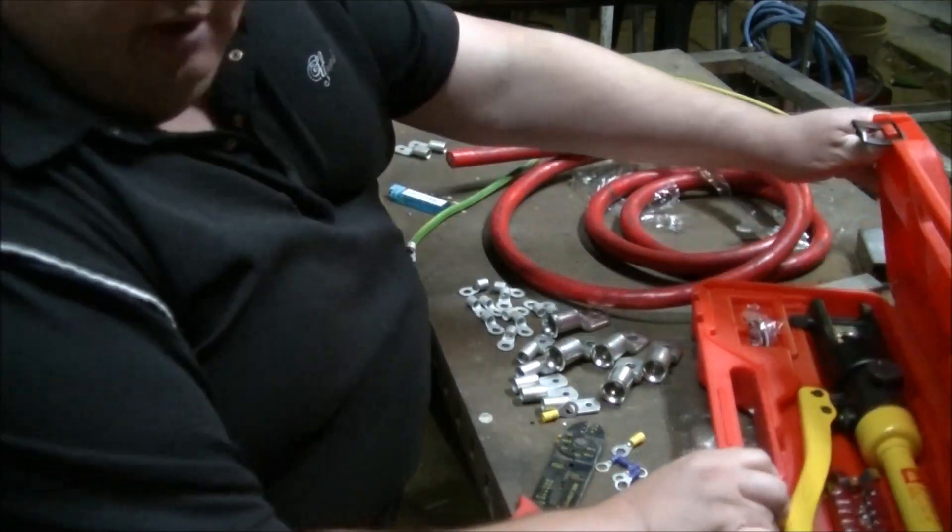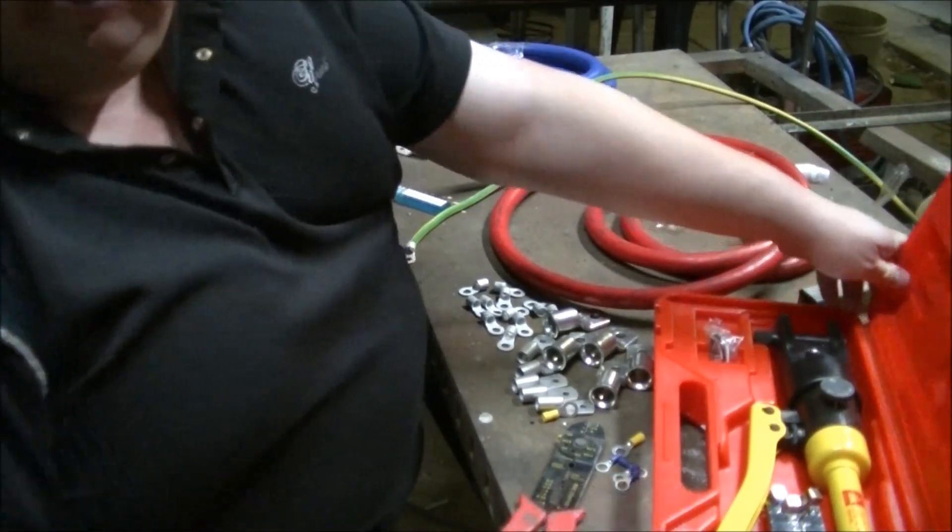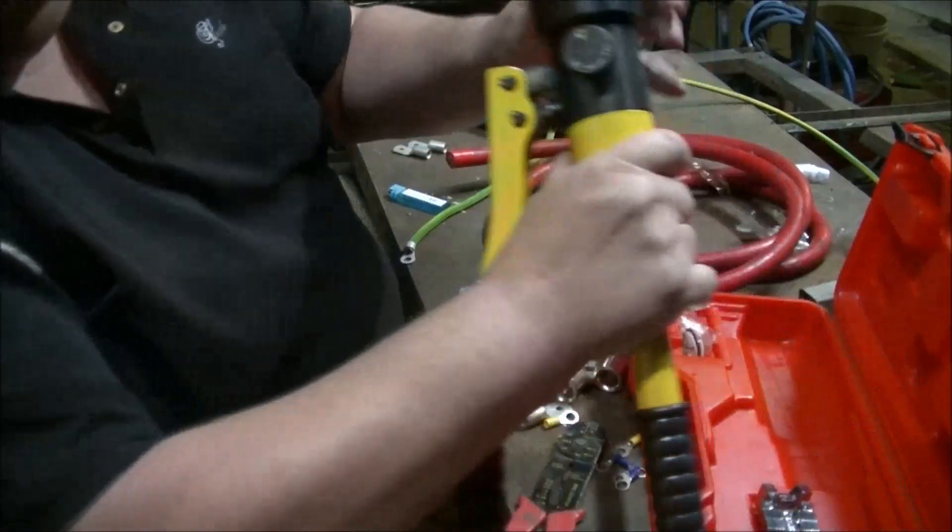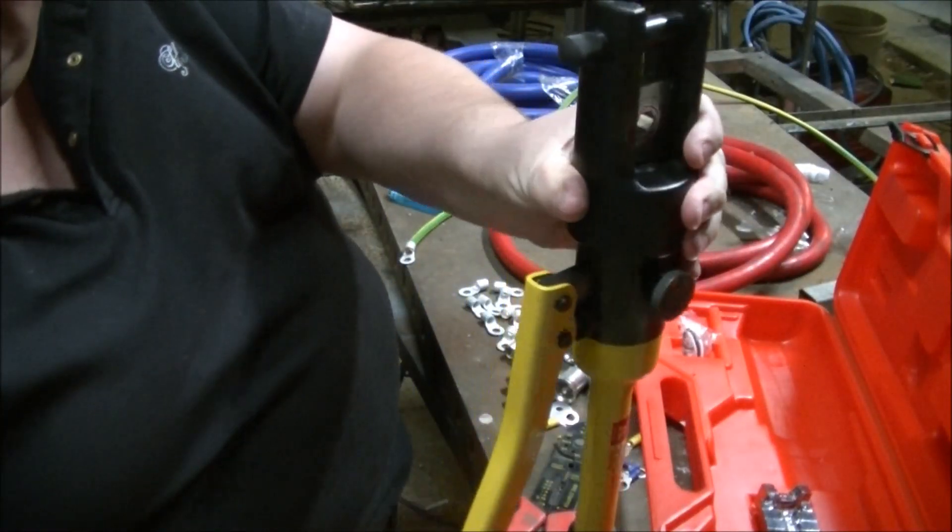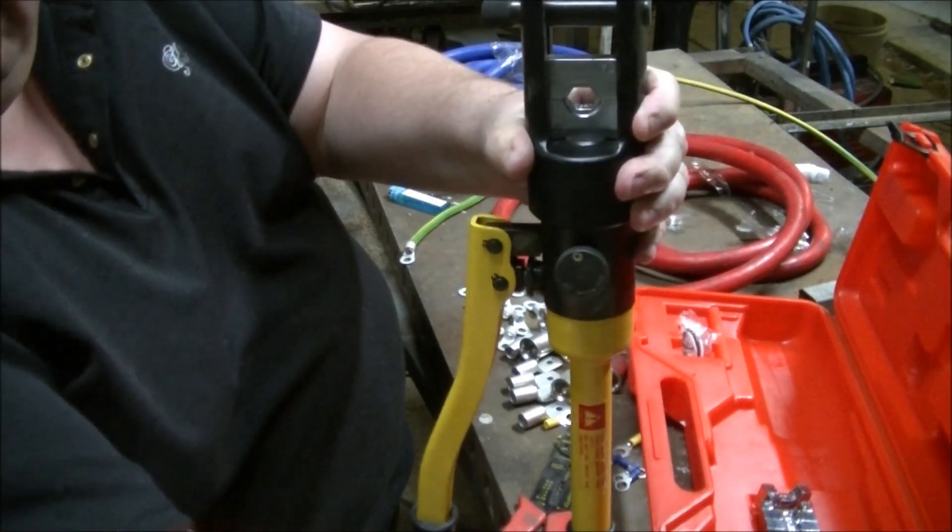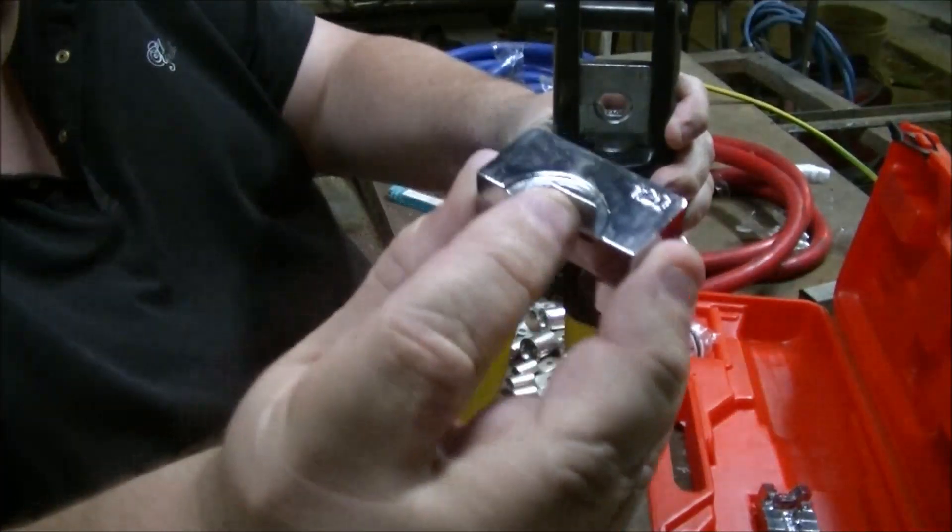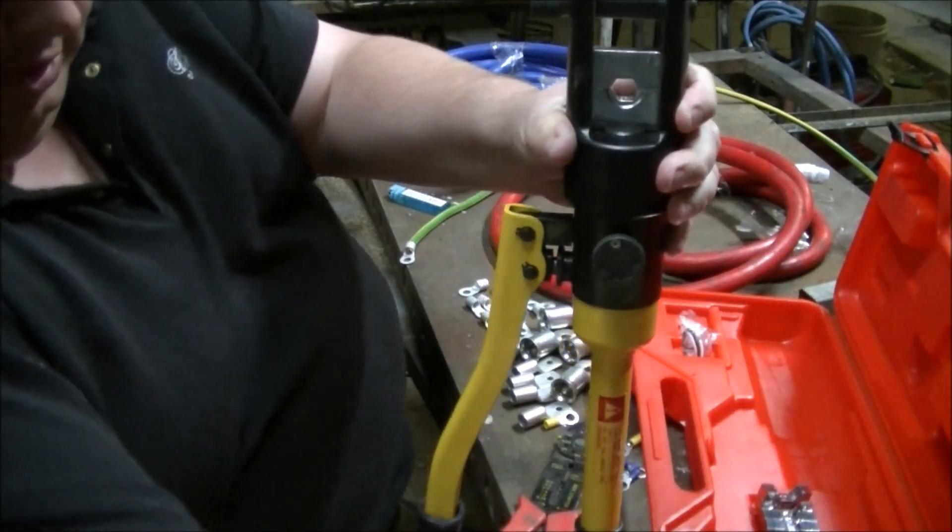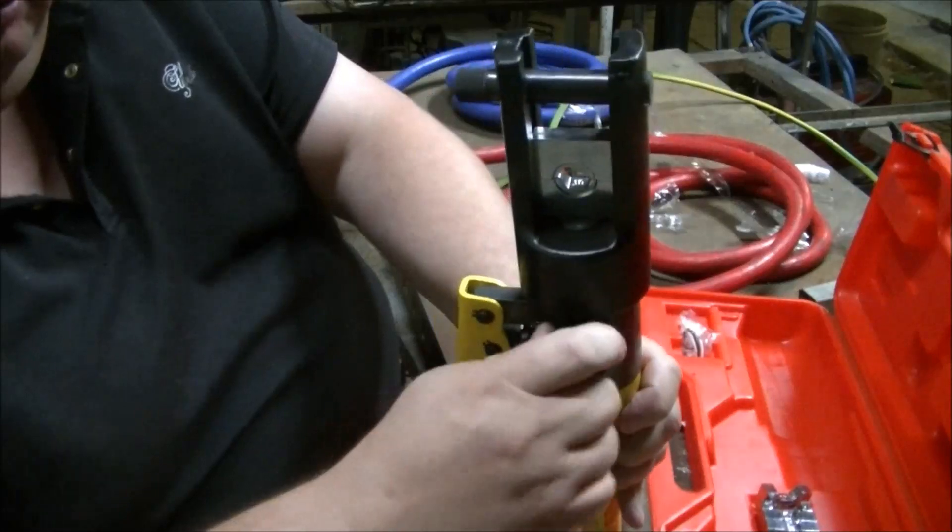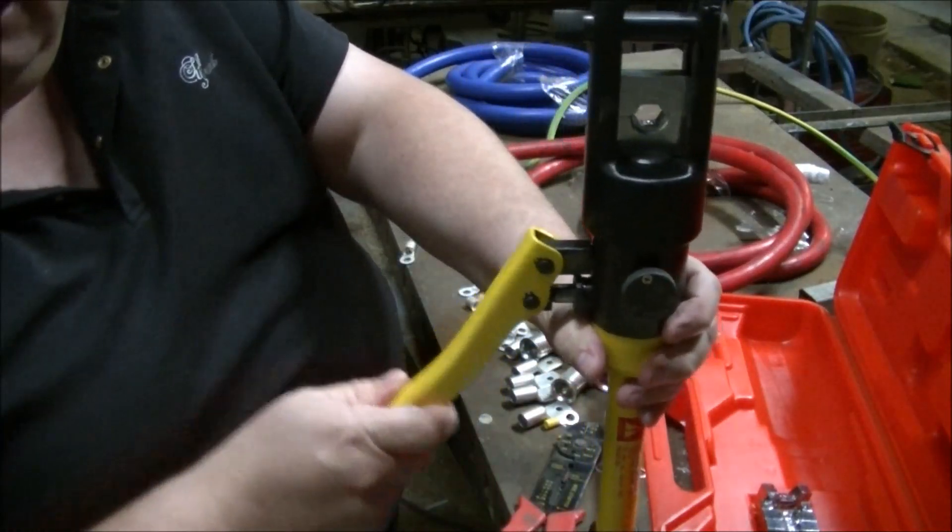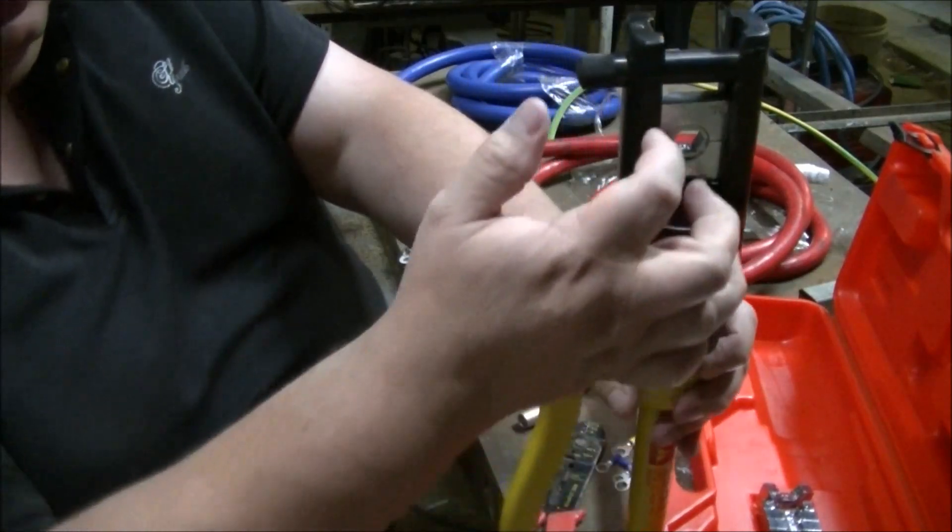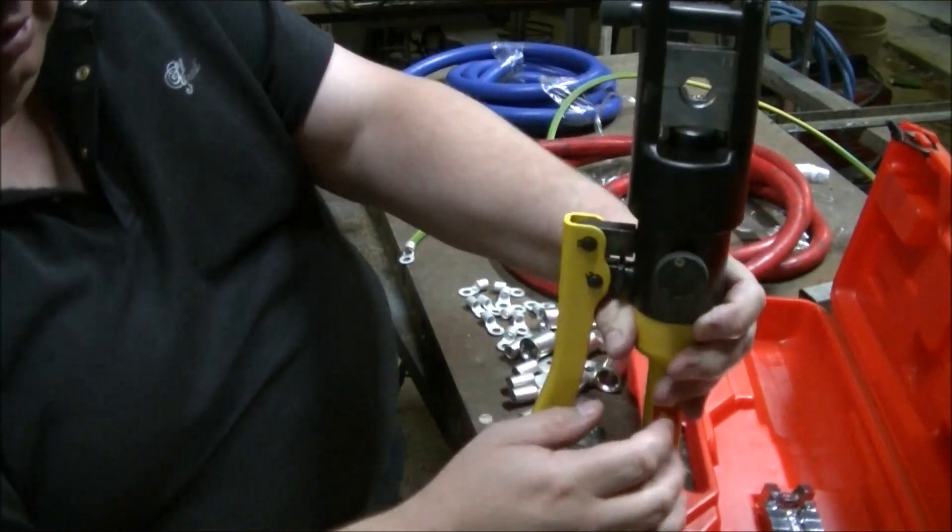So here's my big crimping tool, it's a hydraulic type for doing your big cables and it's got many different size dies for pressing different sized cables. Basically you've got a little release knob and it pumps and then it just crimps the wire, presses the terminals together.